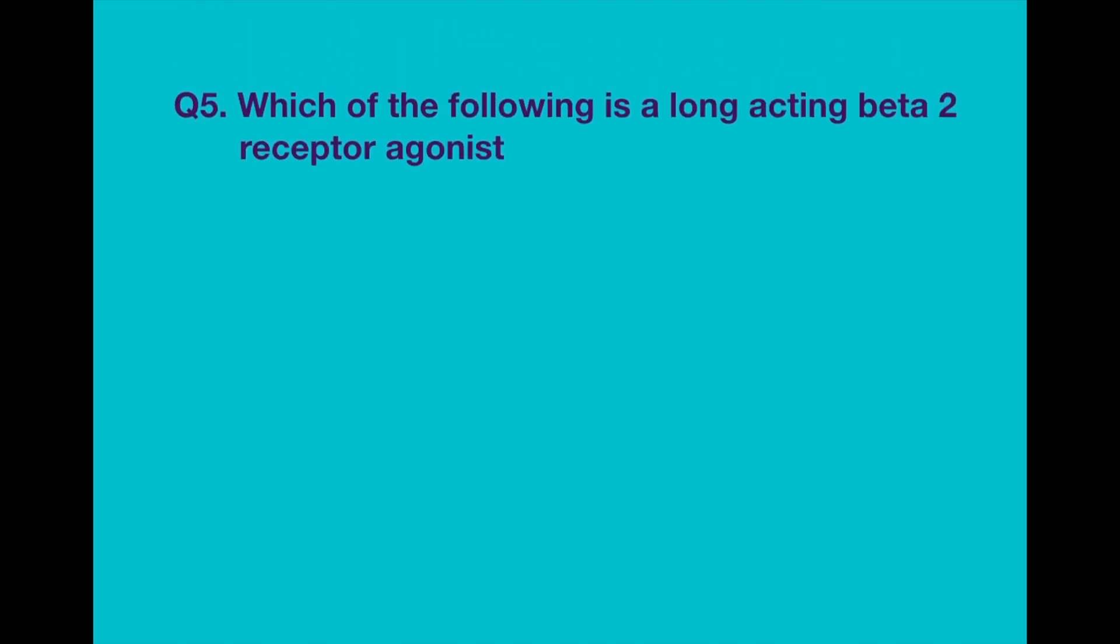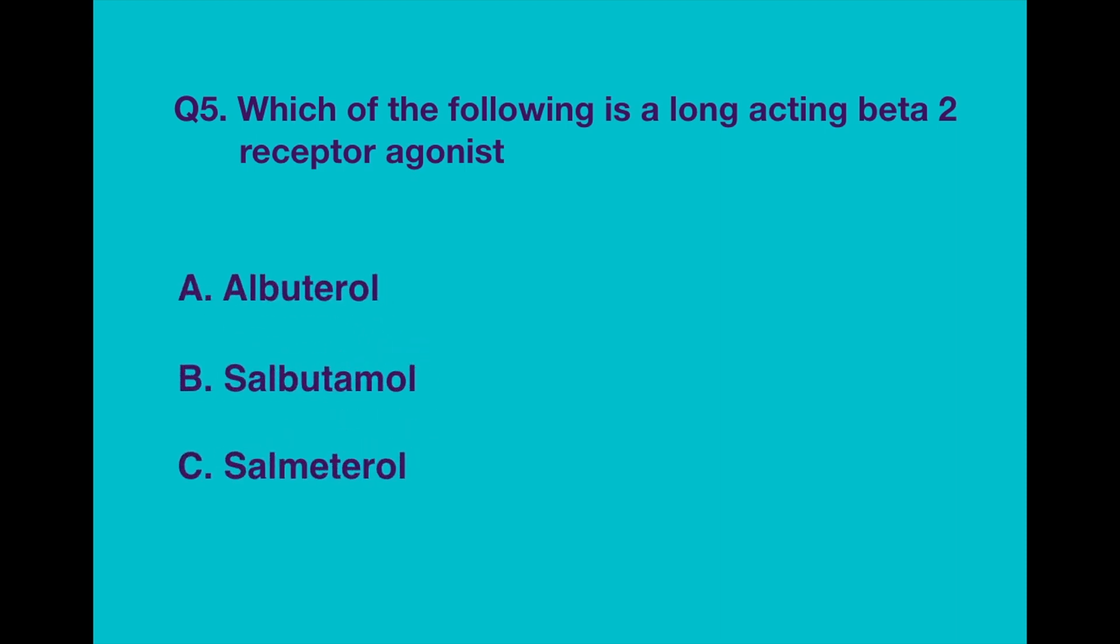Question number five. Which of the following is a long-acting beta-2 receptor agonist? Option A: Albuterol. Option B: Salbutamol. Option C: Salmeterol.